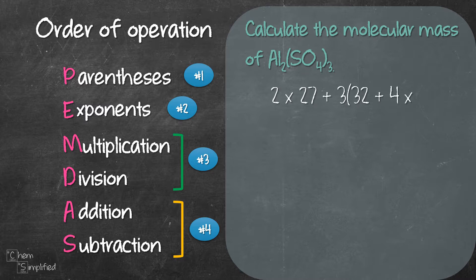2 times 27 plus 3 times the whole thing. Sulfur is 32, oxygen is 16 but we have 4 of it so there we go. That's the whole equation. Let's apply PEMDAS on this equation.